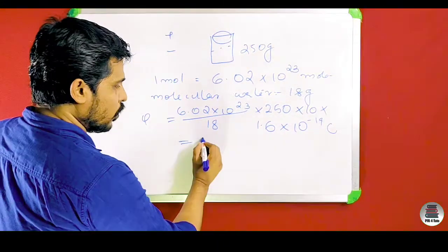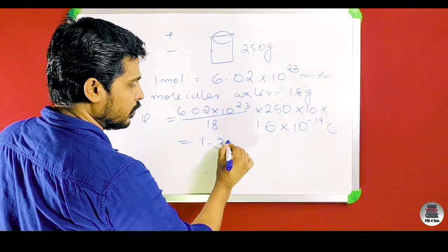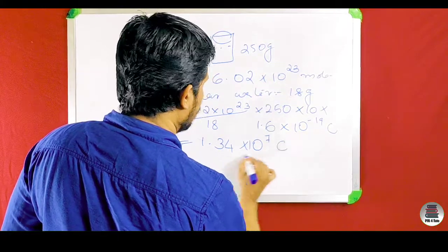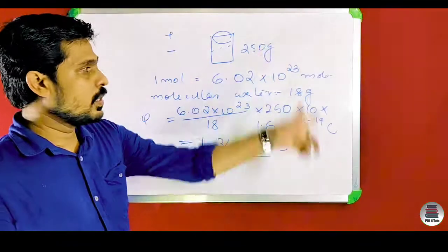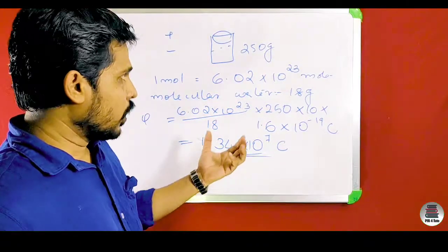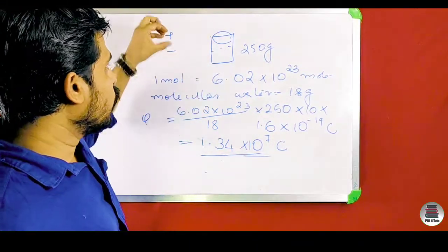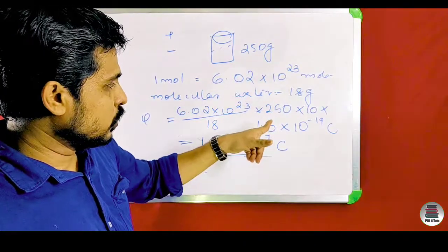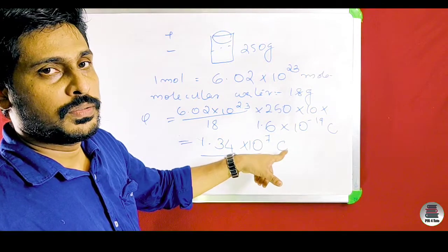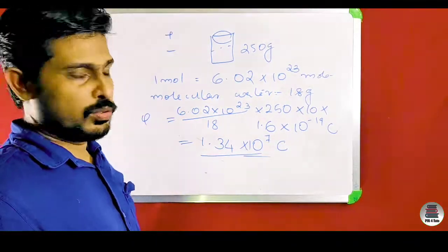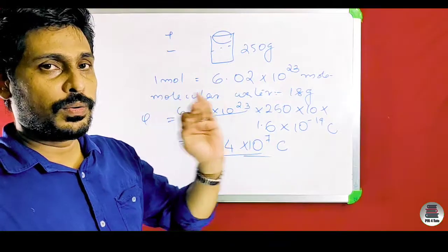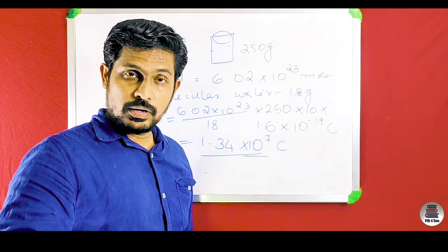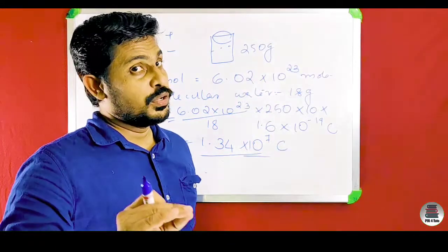The total positive charge in 250 grams of water is approximately 1.34 into 10 raised to 7 coulombs. The negative charge is also the same. That's all for this class — please subscribe to the channel, like, comment, and share.